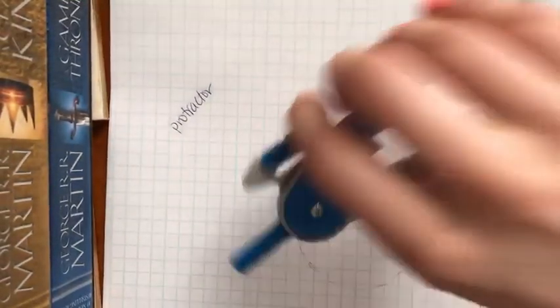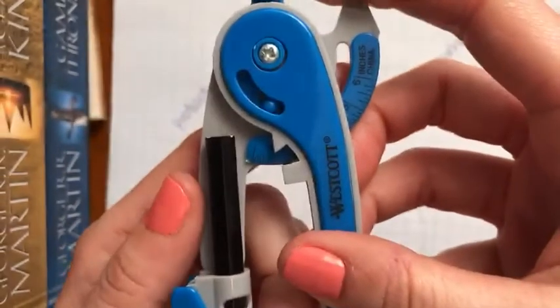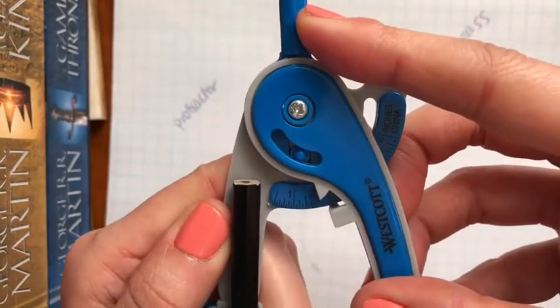So a compass is a cool tool because it allows us to make circles, which is kind of fun, but it gives us the ability to pick how long we want something to be and draw a circle of that length or an arc of that length.